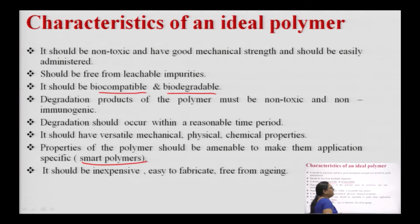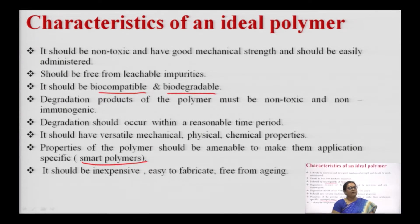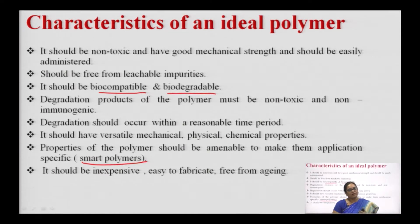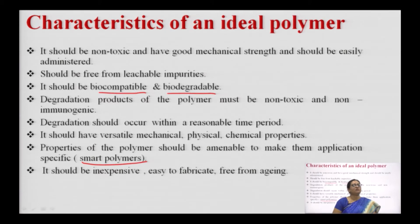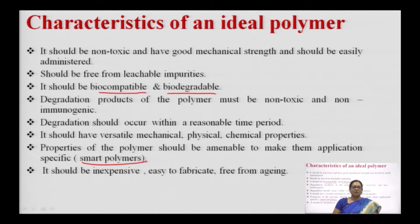Lastly, the polymer should be inexpensive, easy to fabricate, and free from aging. Inexpensive means the cost should not be very high, because ultimately a high polymer cost adds to the cost of the product — the polymer cost should preferably be less than the cost of the drug. It should not require any specialized technology to handle. Free from aging means free from age-related degradation, which could lead to changes in polymer properties affecting drug release patterns.